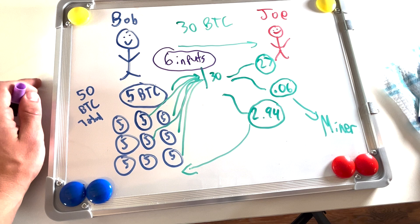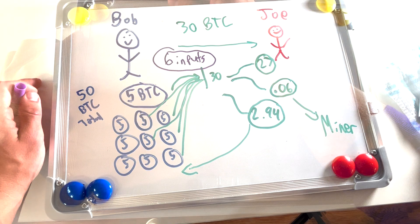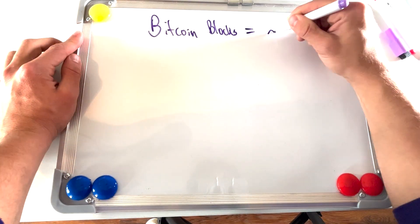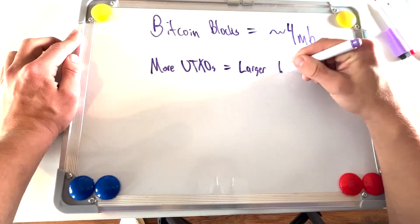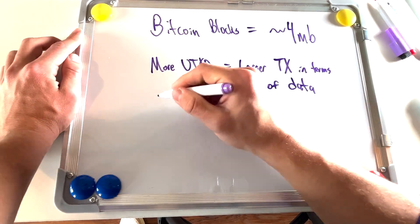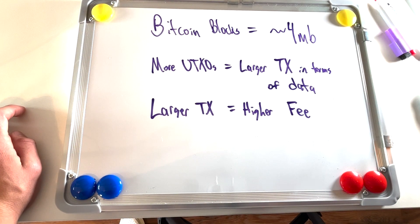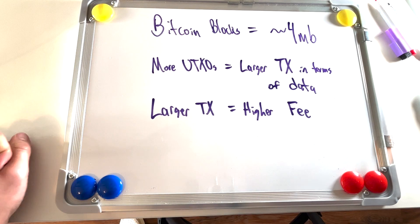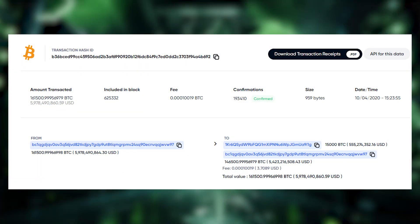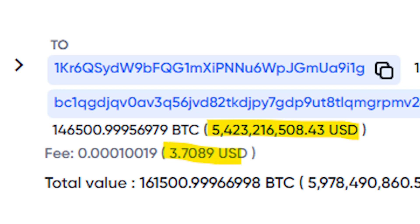This is not because Bob sent 30 Bitcoin compared to Chad sending just 5. This is because Bob's transaction used six UTXOs as inputs, while Chad's transaction only used one UTXO as an input. There is a limited amount of data that can be included in each Bitcoin block. The more UTXOs used in a transaction, the more data that transaction will take up. Transaction fees are paid according to the size of the transaction in terms of data, not the size in terms of how much Bitcoin is being sent. This is why it's possible to send hundreds of millions of dollars worth of Bitcoin and not pay exponentially more in fees than someone sending a few dollars worth.